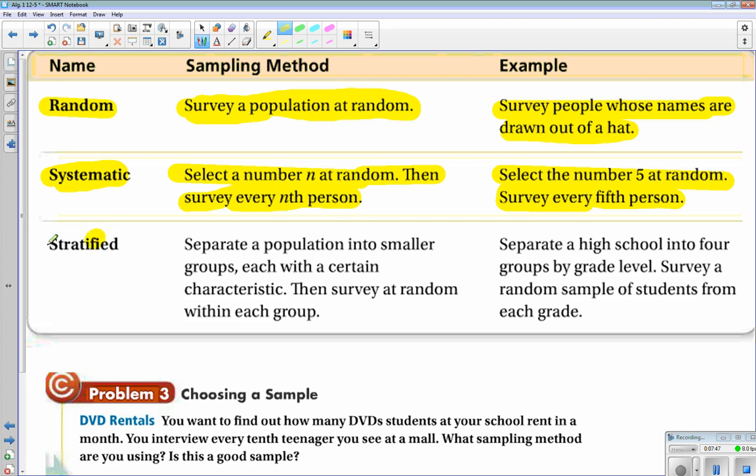And then the last sampling method that we're going to study is stratified. Separate a population into smaller groups, each with a certain characteristic. Then survey at random within each group. What that looks like is separate a high school into four groups by grade level. Survey a random sample of students from each grade level.